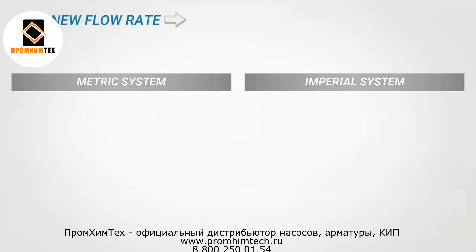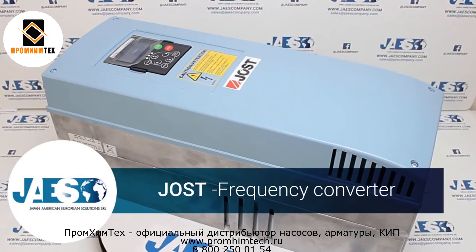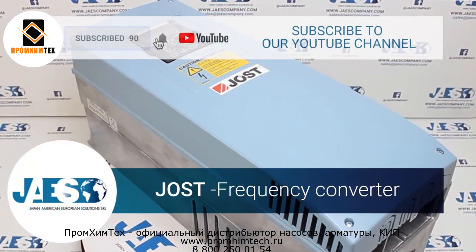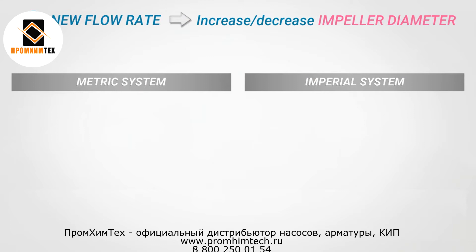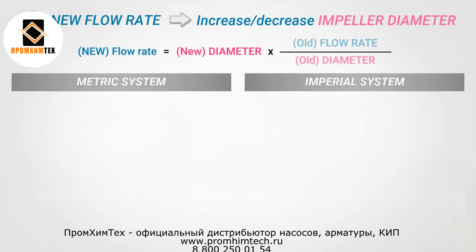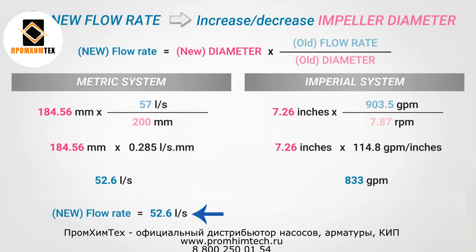Now we are going to calculate the new flow rate in the case we need to change the diameter of the impeller. Changing the impeller size by adding or subtracting material is not the best solution — a good way is to use a frequency converter to change the pump speed and keep the design criteria intact. But if you are trimming down the impeller diameter, then the new flow rate equals the new impeller diameter multiplied by the division of the old flow rate by the old impeller diameter. Using these values, we get 52.6 liters per second, or 833 gallons per minute.